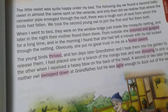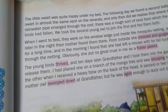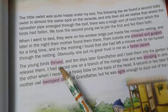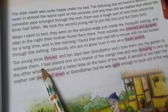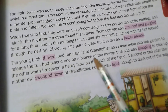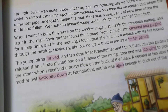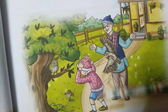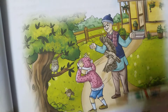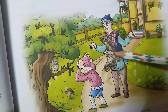The young birds thrived — 'thrived' means grew well. Ten days later, grandfather and the speaker took them into the garden to release them. He placed one on a branch of the mango tree and was stooping — bending the top half of the body forward and down — to pick up the other, when he received a heavy blow on the back of the head.